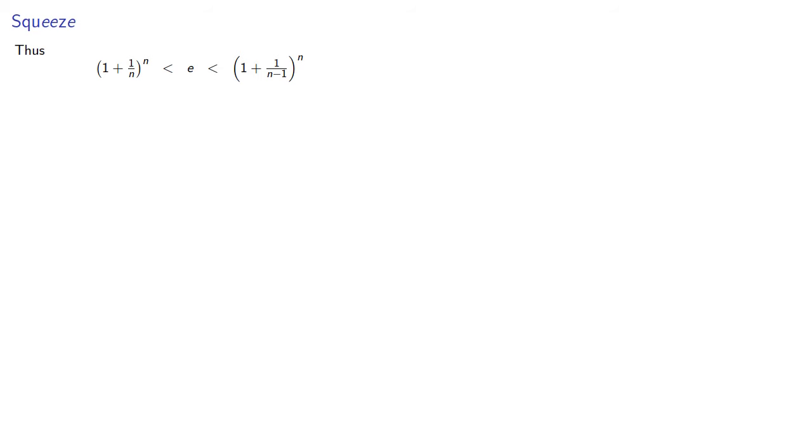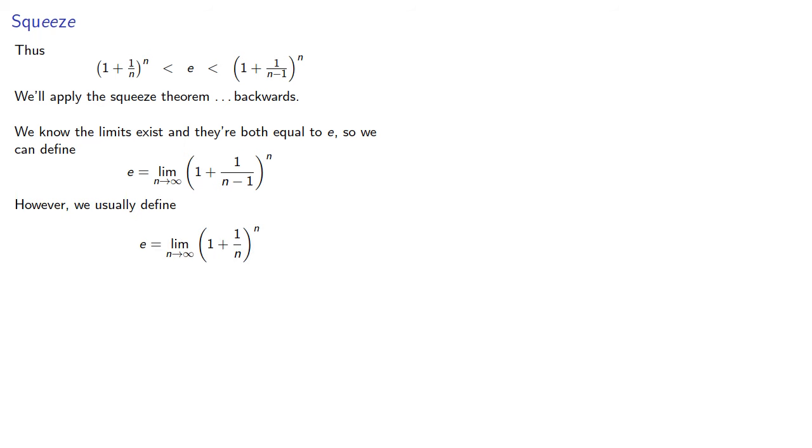And so e is between two expressions. And we'll apply the squeeze theorem backwards. Ordinarily we'd use the squeeze theorem to find a limit, but we know the limits exist and they're both equal to e. And so we can define e as the limit as n goes to infinity of 1 plus 1 over n to the n. And while we could do this because e is either limit, we usually define e to be this limit.